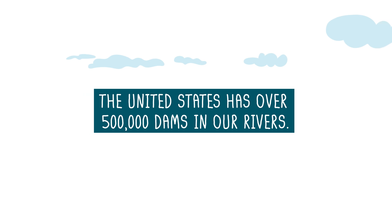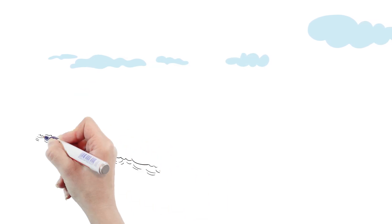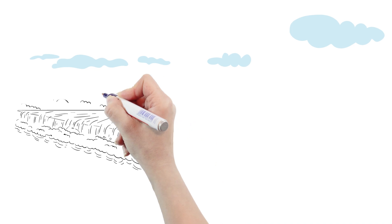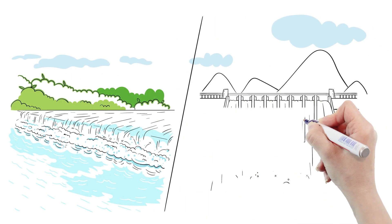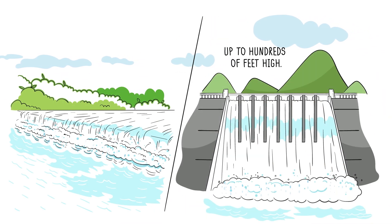The United States has over 500,000 dams in our rivers. Many of these dams are as small as a few feet tall, but some are also very large, up to hundreds of feet high.